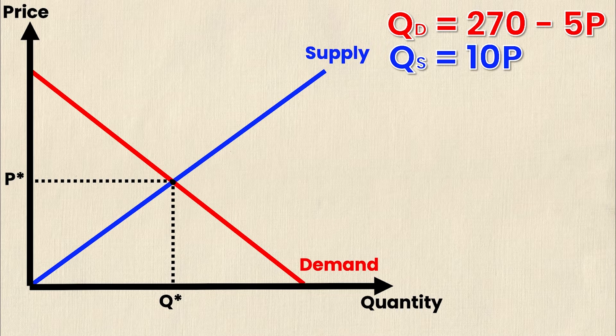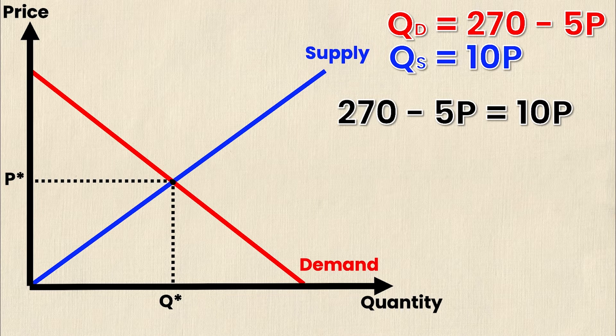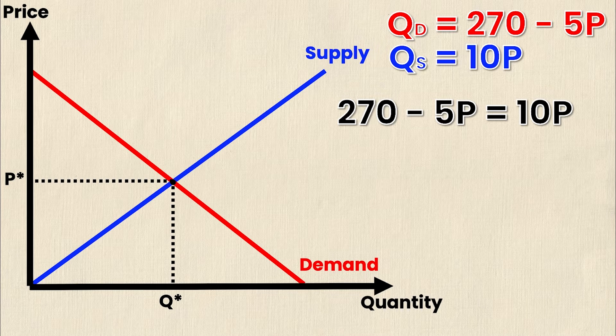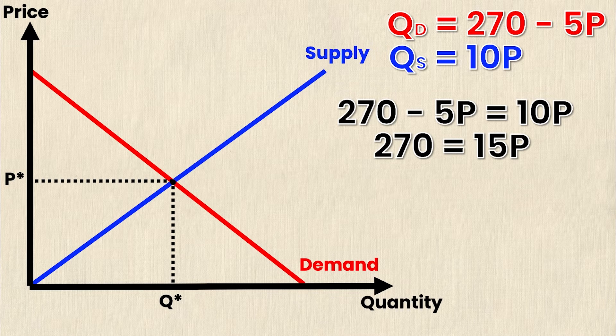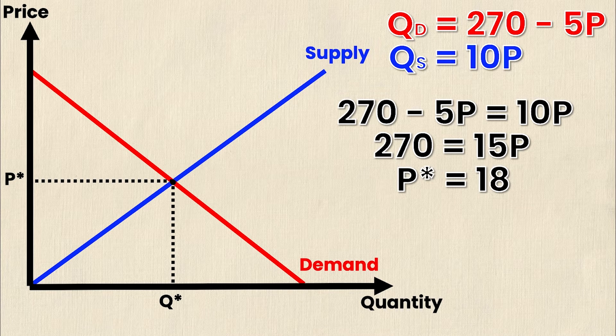So when calculating P star and Q star you simply set the demand equation equal to the supply equation and that's going to yield us 270 minus 5P is equal to 10P. After some simple rearranging I get 270 is equal to 15P and then finally isolating for P I get P star or the P value at equilibrium is equal to 18.